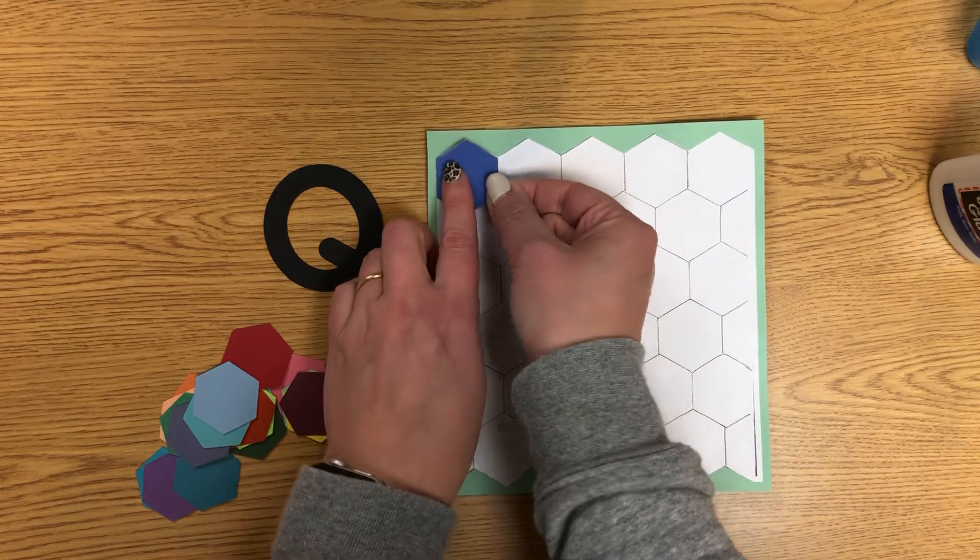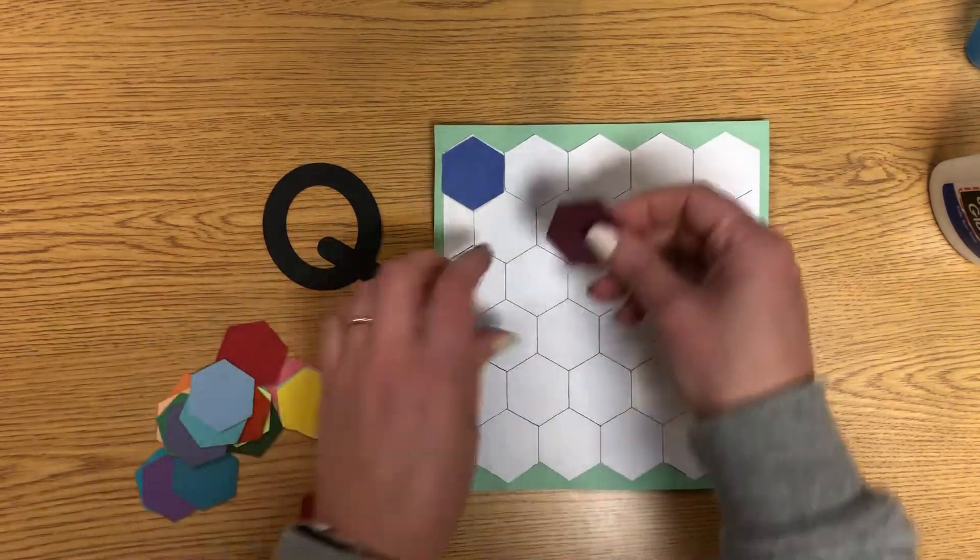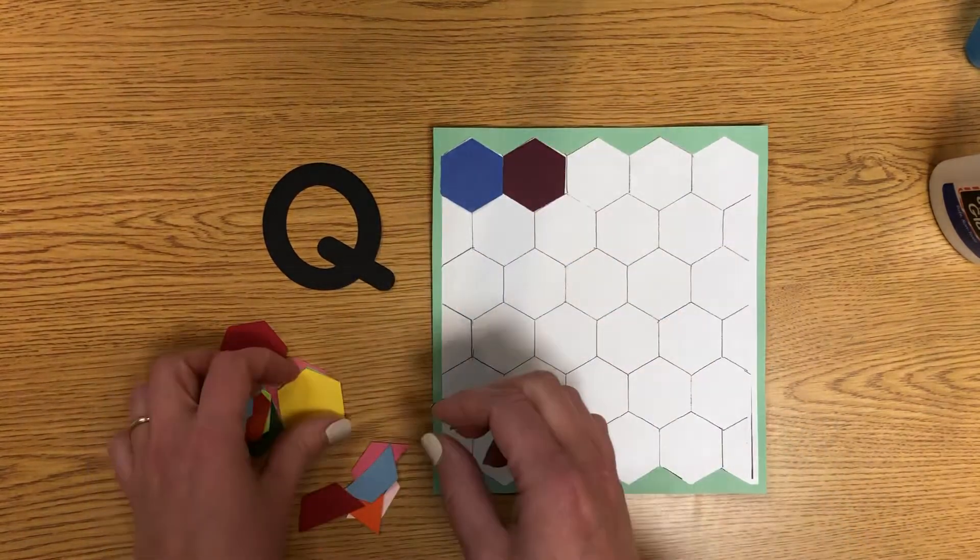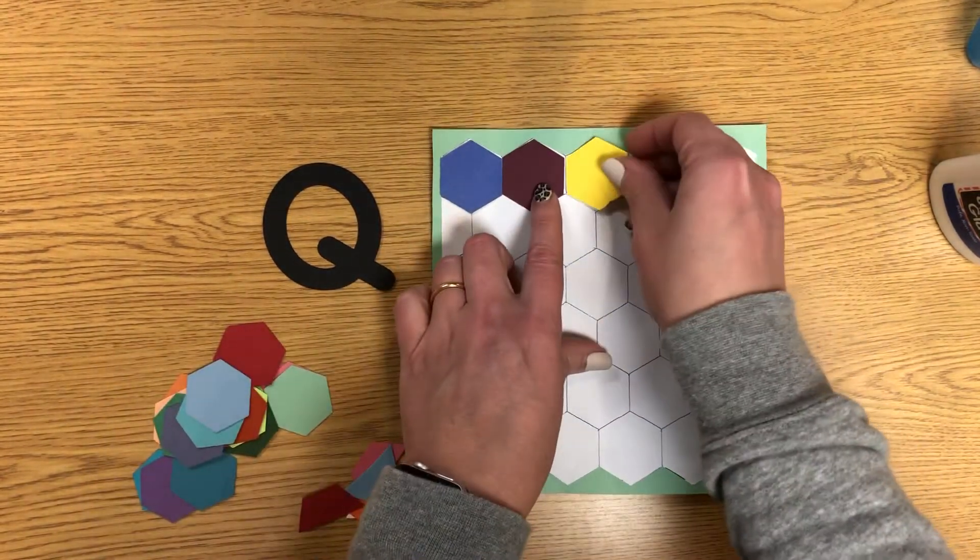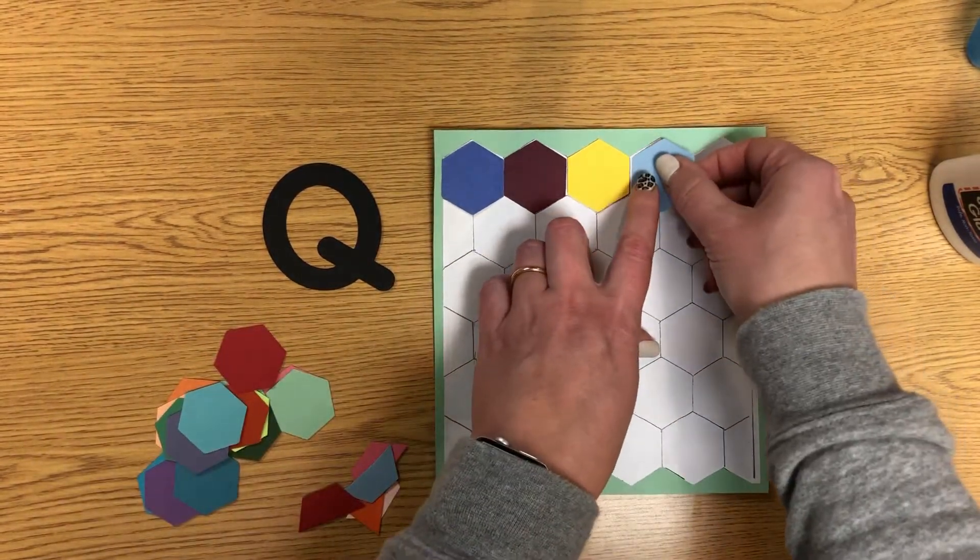Line it up with the lines. Now whatever order you want to put them in, you're going to make a quilt. A quilt is a blanket with a bunch of different pieces of fabric all sewed together to make one big blanket.